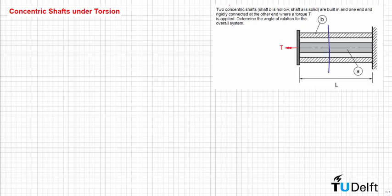In this problem we have two concentric shafts: shaft B which is hollow and shaft A which is solid. They are both clamped at one end at this wall and they are rigidly connected at the other end. At that end we are applying the torque T, and the problem is asking to determine what is the angle of rotation of the overall system at that point.